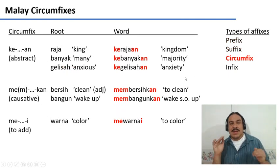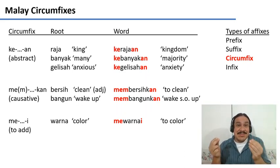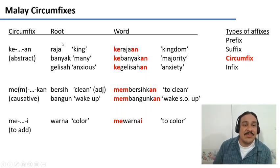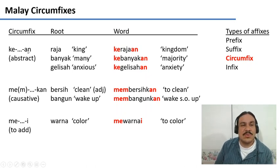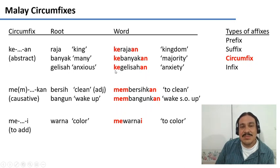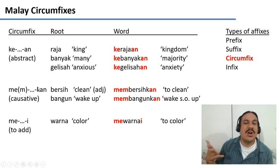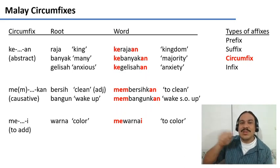Languages can also have circumfixes, which are essentially both a prefix and a suffix at the same time that go around a root. In Malay, we have roots like 'raja' meaning king. If you put the circumfix 'ke-...-an' around it — used for expressing abstract qualities — we get 'kerajaan,' kingdom. From 'banyak' (many) we get 'kebanyakan' (majority). From 'gelisah' (anxious) we get 'kegelisahan' (anxiety). The circumfix 'mem-...-kan' means to cause something: 'bersih' (clean) becomes 'membersihkan' (to clean something up), and 'bangun' (wake up) becomes 'membangunkan' (to cause someone to wake up).